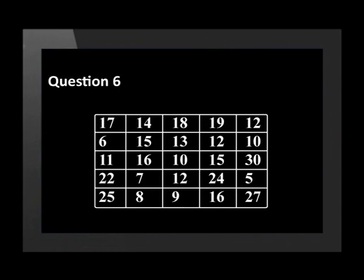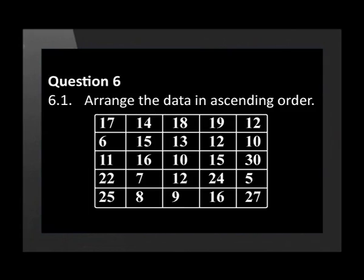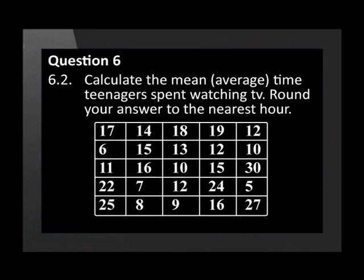Question six. This data shows the number of hours in a week 25 teenagers spent watching television. Their times are correct to the nearest hour. 6.1: Arrange the data in ascending order. 6.2: Calculate the mean or average time teenagers spent watching television. Round your answer to the nearest hour.